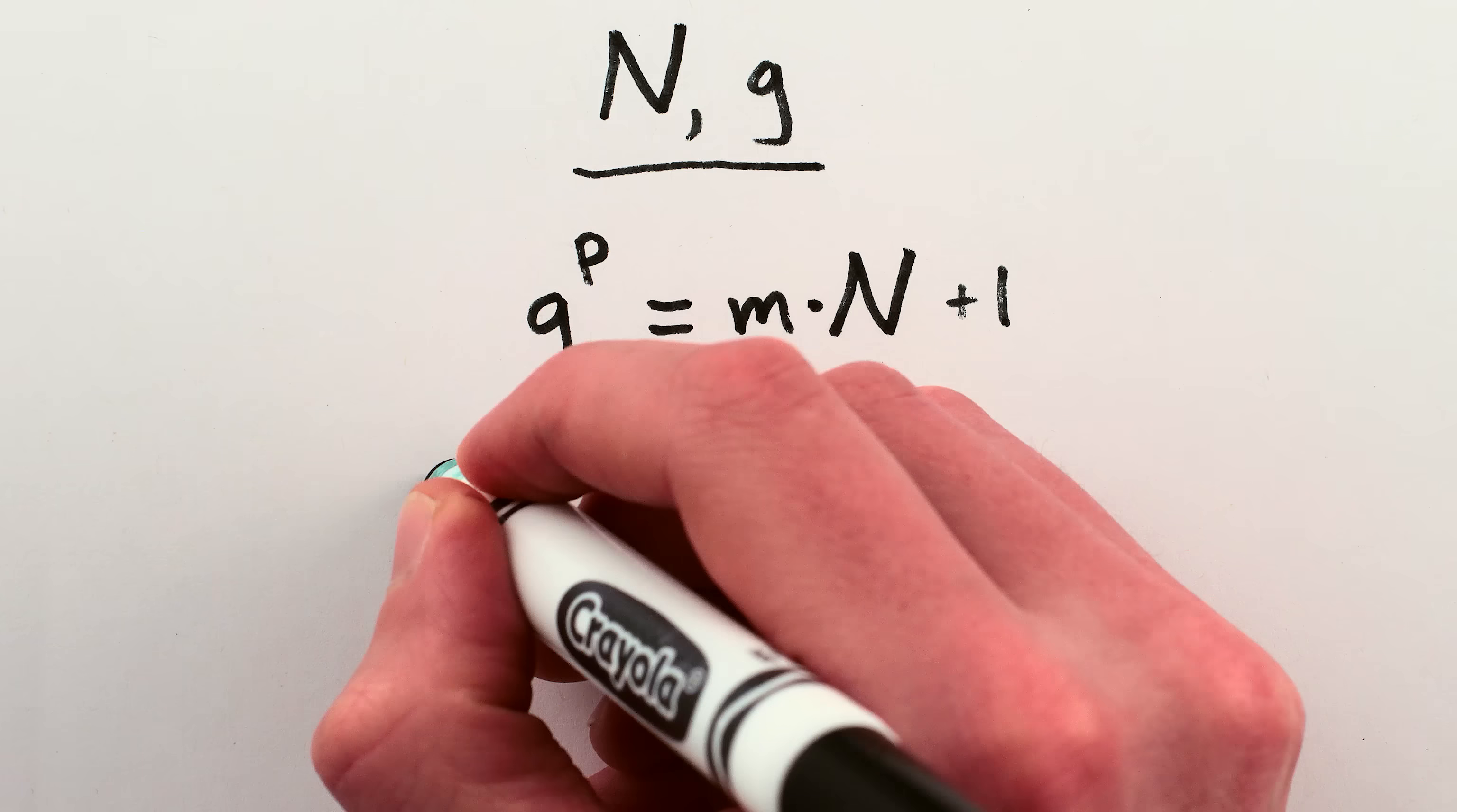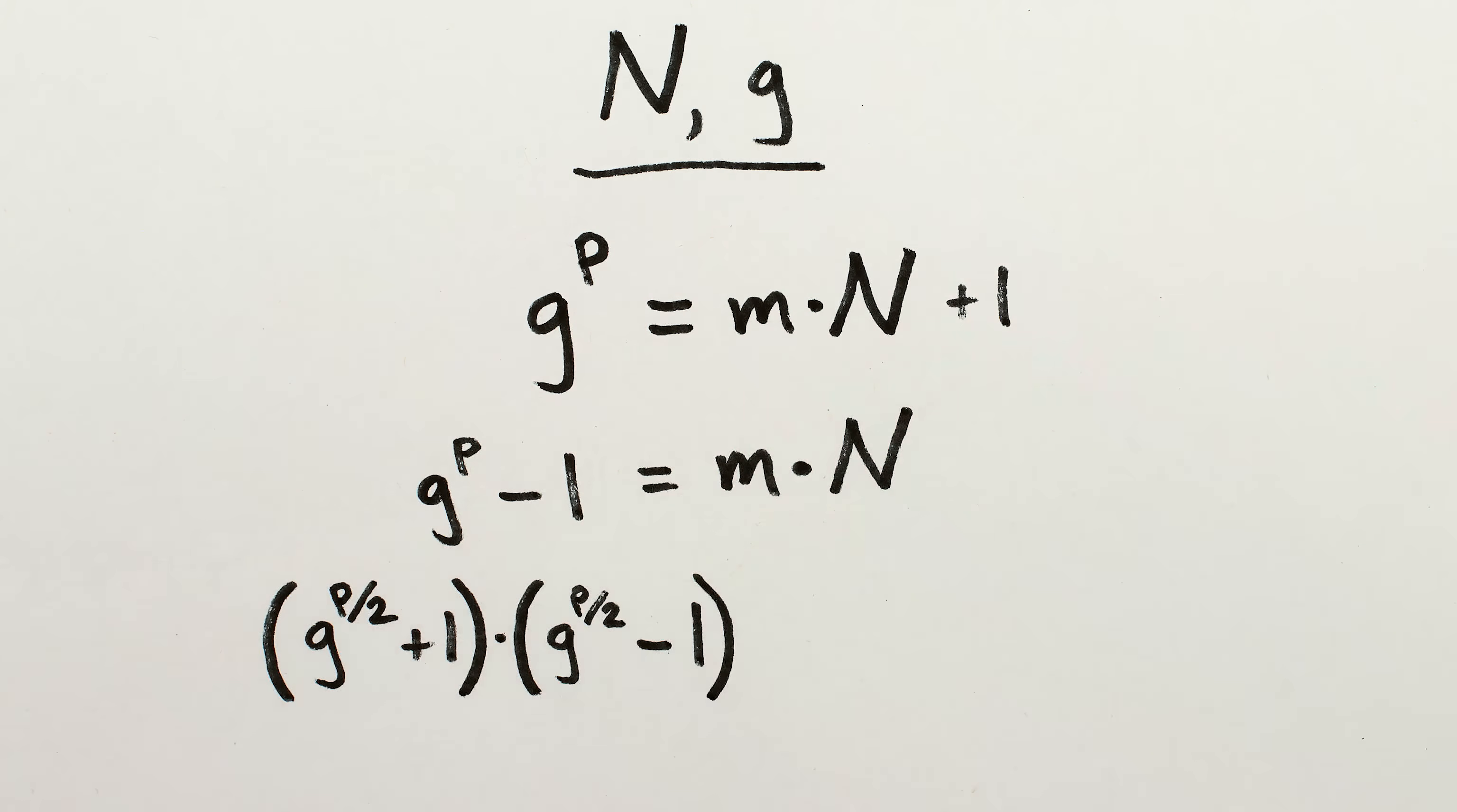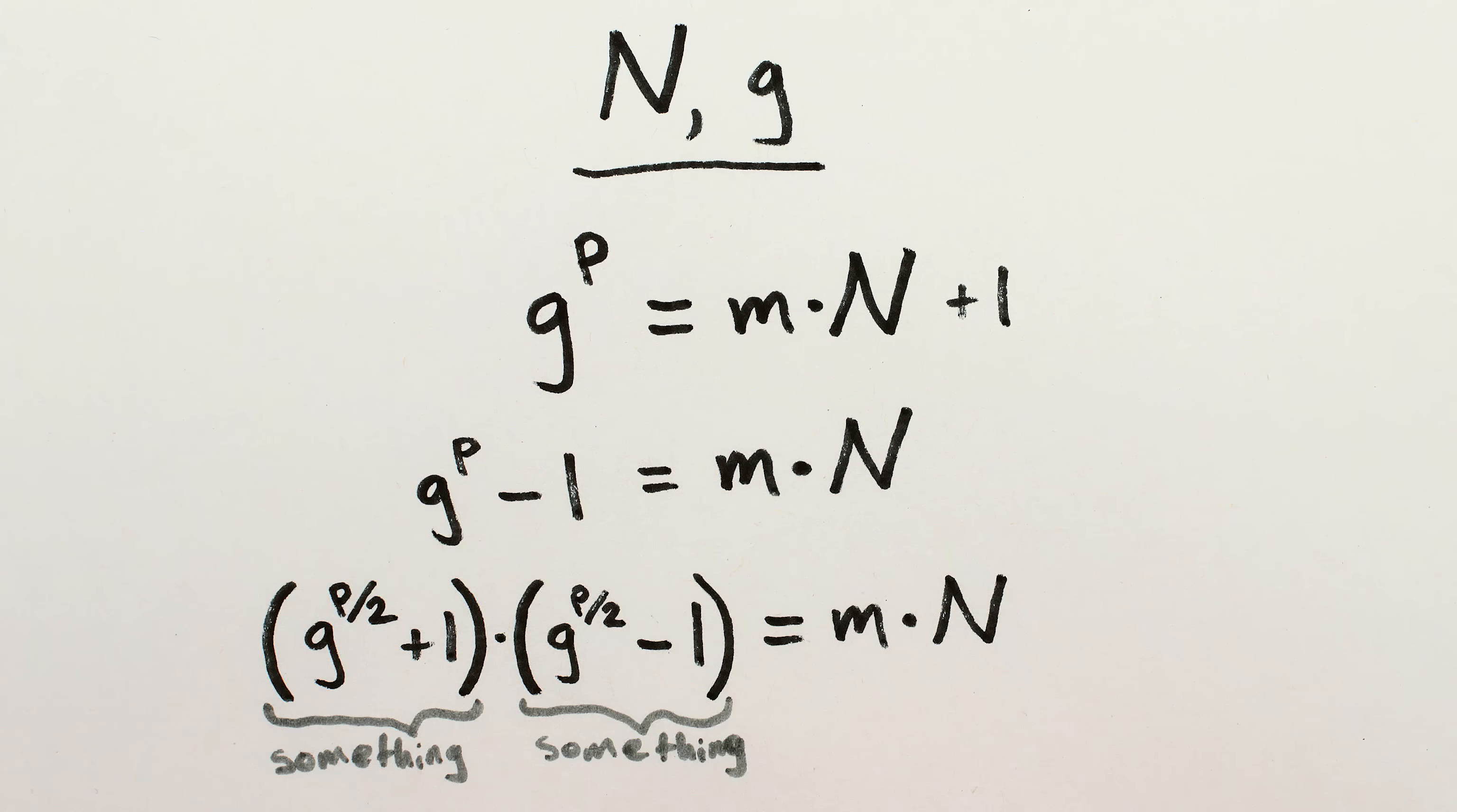If we rearrange this equation by subtracting the 1 from both sides, we can rewrite g to the p minus 1 as g to the p over 2 plus 1 times g to the p over 2 minus 1. You can multiply that back together to convince yourself that it works. And now we have an equation that almost looks like something times something is equal to n, which is exactly what we're trying to find. Factors of n.